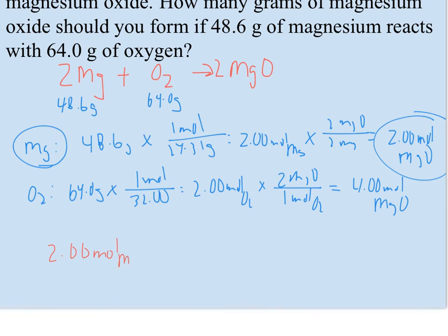2 moles of MgO is what I'm limited to. Times the mass of 1 mole of MgO, which is 24.31 plus the 16, so 40.31 grams. Times 2 is going to be 80.62 grams is what I should expect to make.